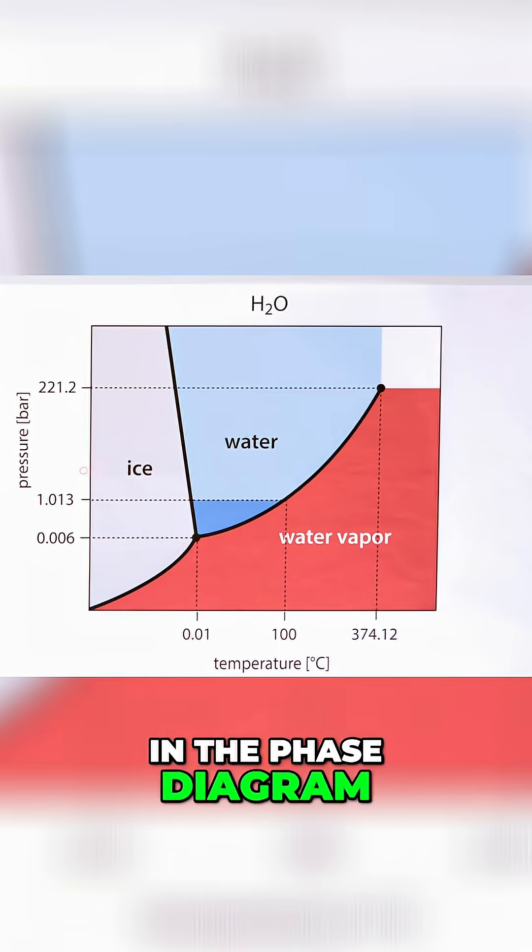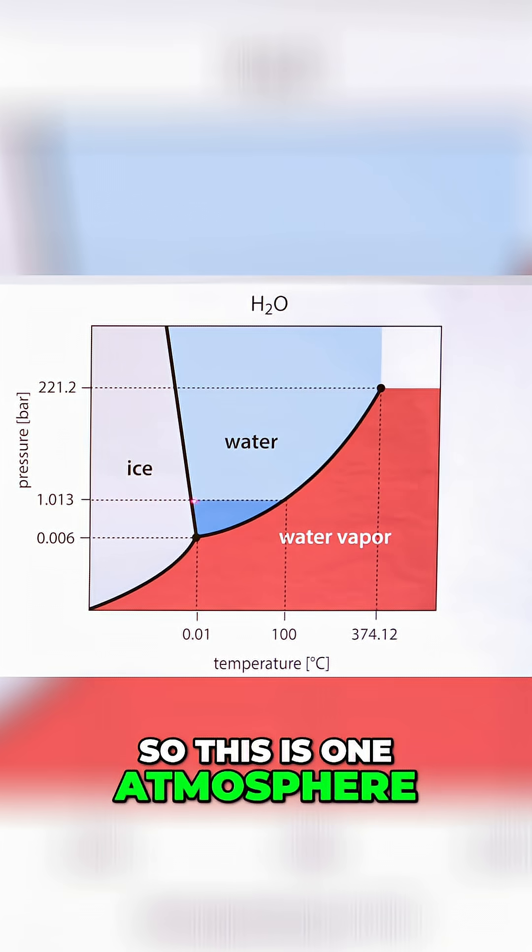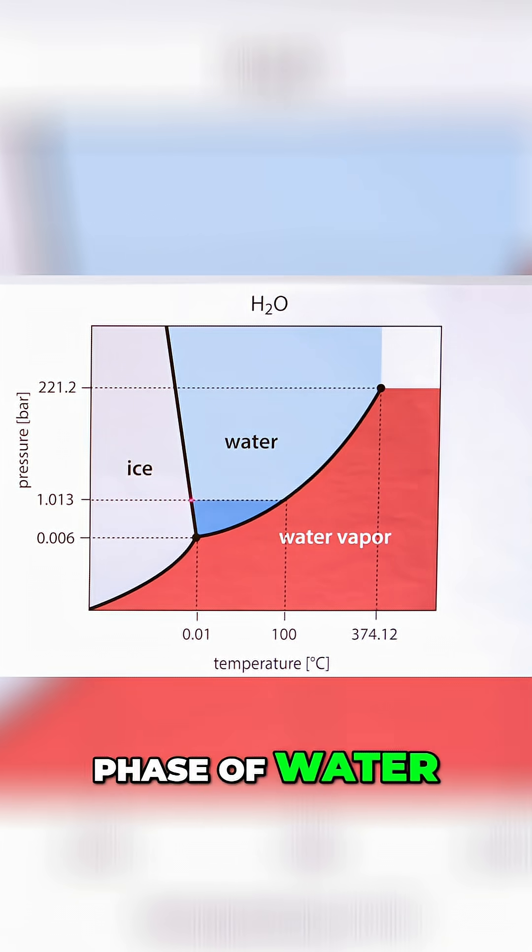Now we can see that in the phase diagram of water, 1.013, this is in bars, so this is one atmosphere. This is equivalent to one atmosphere of pressure. We have the solid phase of water, we have the liquid phase of water, and the gas phase of water.